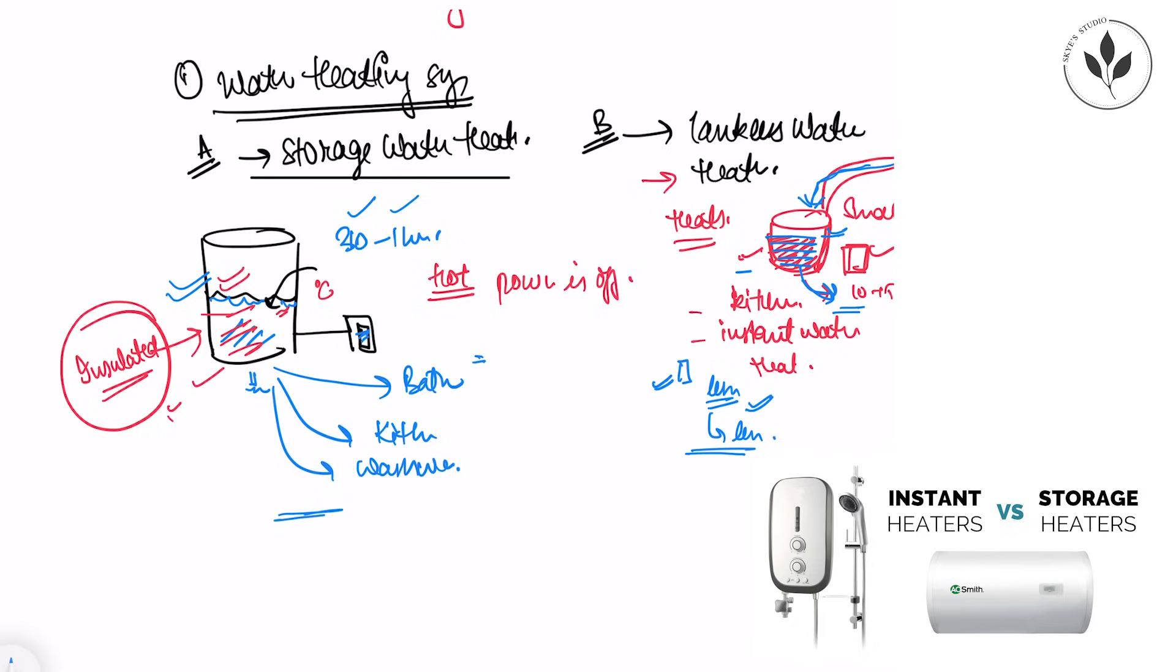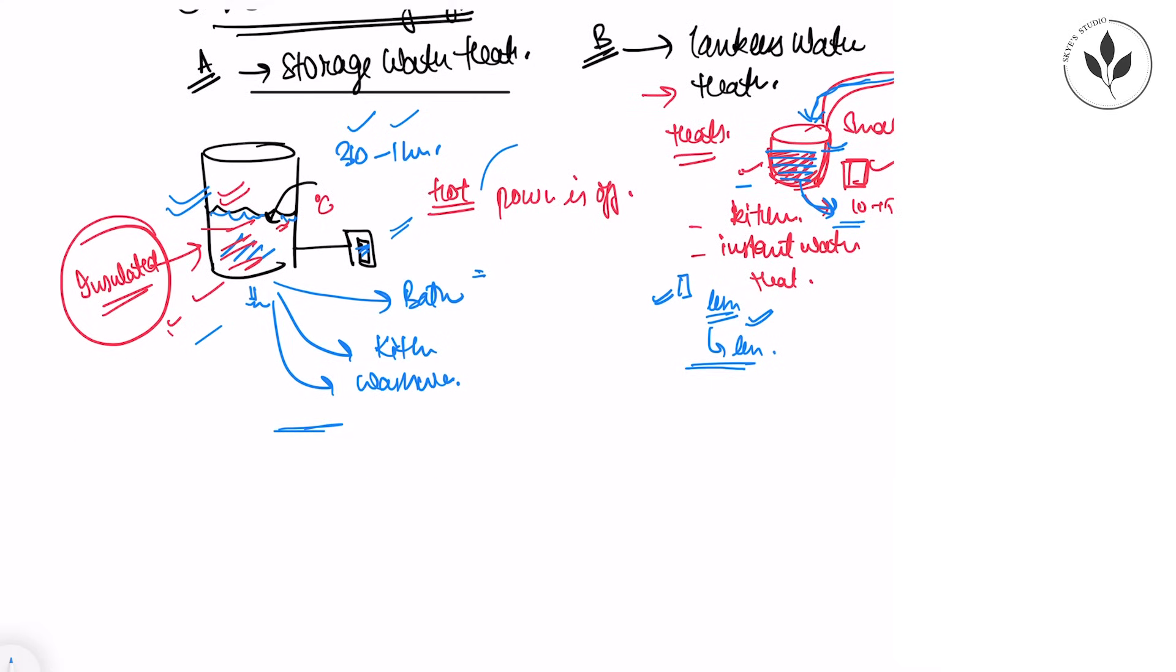As soon as you switch on, the water gets heated. It takes less time, which means it will take less energy compared to your storage water heater. Overall this will take less energy, but the benefit of the storage tank is you can use the water even after the power is off for one or two hours - you'll always get warm water. With tankless, you get hot water for less time but it's energy efficient. Since it's smaller in size, it takes less space in your home.